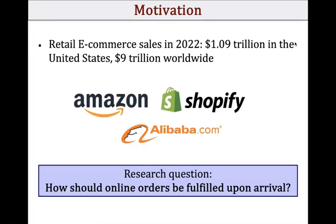Let me first start with the motivation behind this project. Retail e-commerce has been growing very fast in the past few years. For example, e-commerce sales in 2022 were about $1 trillion in the US and about $9 trillion worldwide. Because of this rapid growth, an increasingly important question that companies like Amazon, Shopify, or Alibaba have to answer is: how should online orders be fulfilled upon arrival? This is going to be the main research question we're trying to answer in this paper.